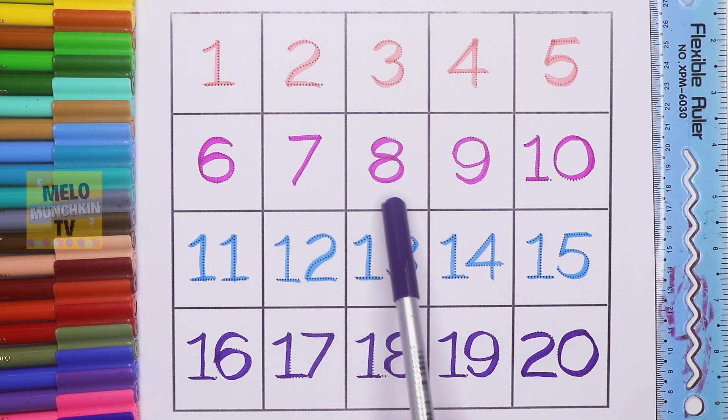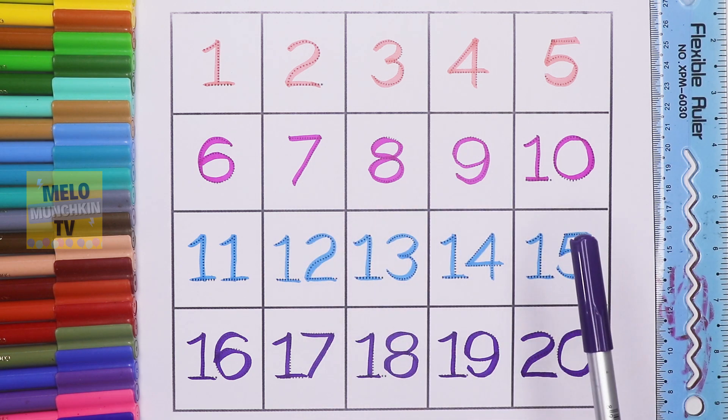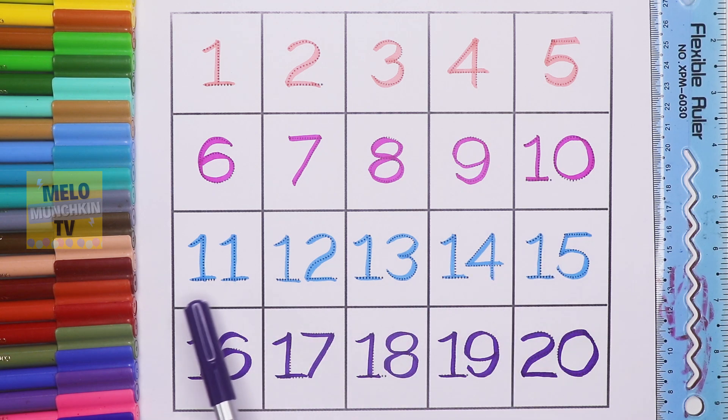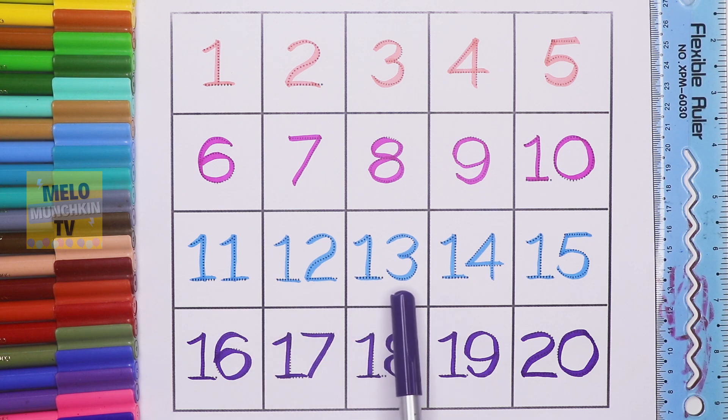7, 8, 9, 10. Eleven, 11. Twelve, 12. Thirteen, 13. Fourteen, 14. Fifteen, 15. Sixteen, 16. Seventeen, 17. Eighteen, 18. Nineteen, 19. Twenty, 20.